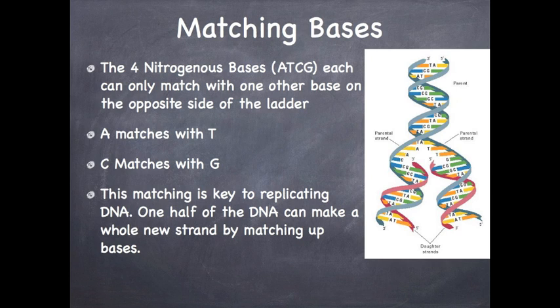Those four nitrogenous bases have matches they go with, because if there's no opposite side of the ladder, the ladder will fall over. The four nitrogenous bases — adenine, thymine, cytosine, and guanine — only match with one other base. A always matches with T, and T always matches with A. C always matches with G, and G always matches with C.